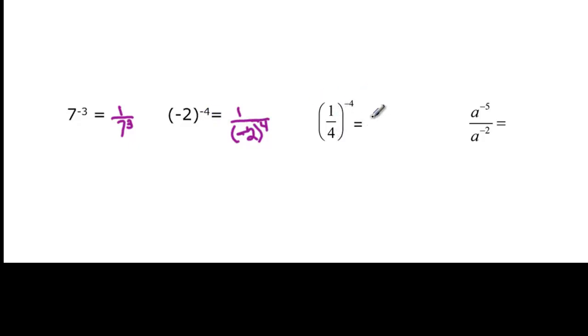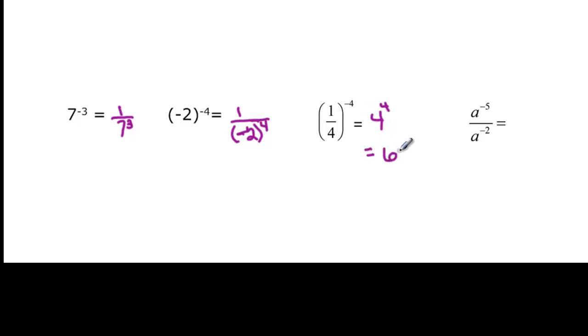What's the reciprocal of 1 fourth? 4. I've taken the reciprocal, so now I want to make this a positive exponent. So it's 4 to the fourth, and I do happen to know that that's 64.